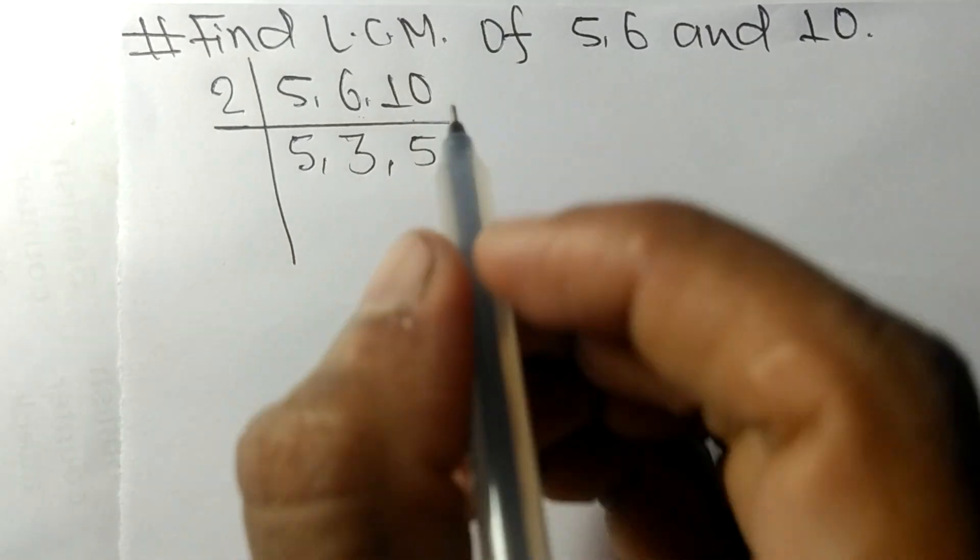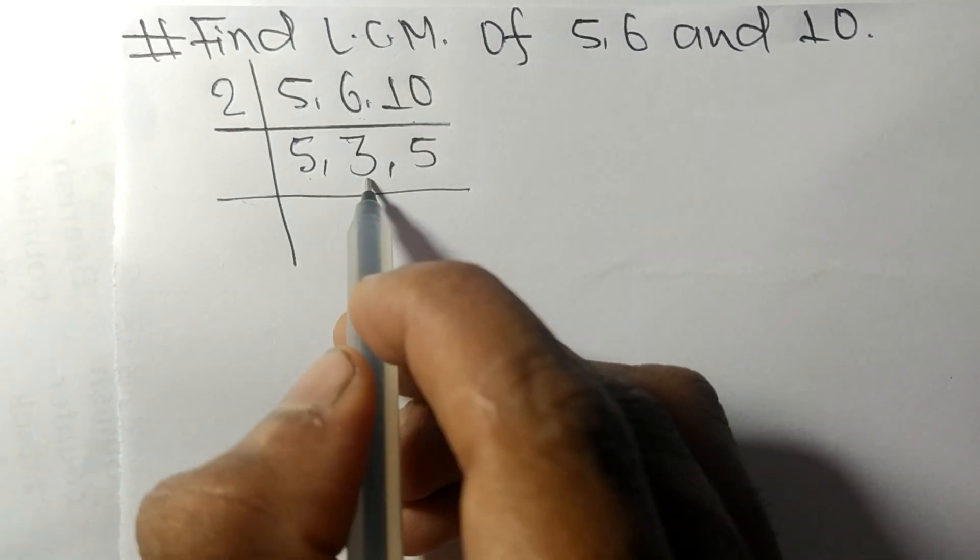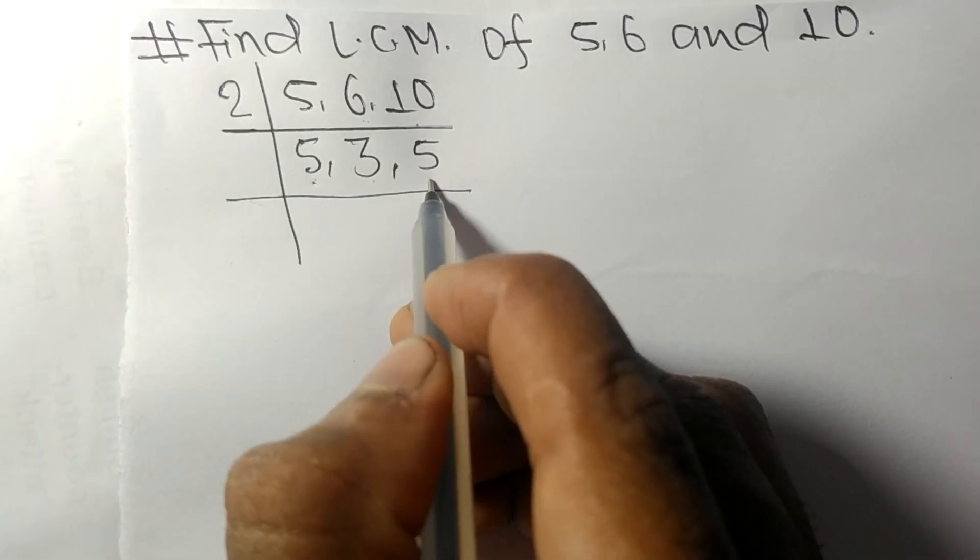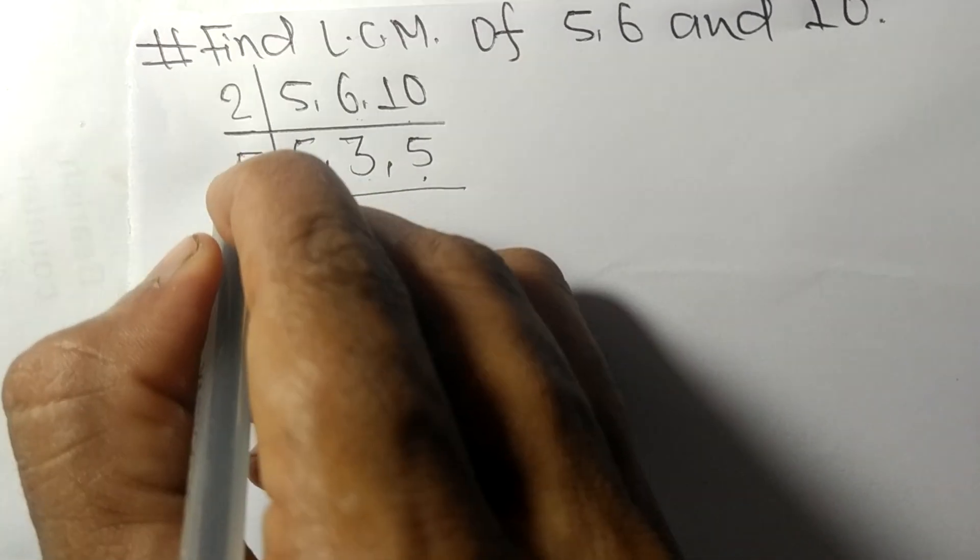5 mean 10. So now we got 5, 3 and 5, and these both 5s are exactly divisible by 5.